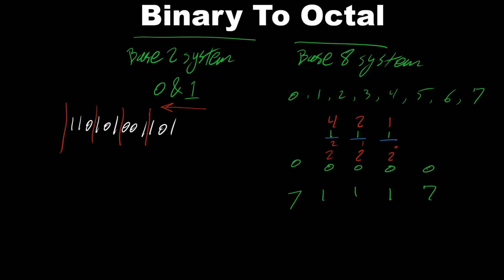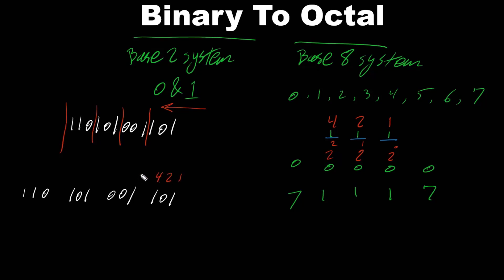Let's rewrite the binary number grouped by every 3 bits: 1 1 0 | 1 0 1 | 0 1 1 | 0 1. Then we place the decimal values for each group: 1, 2, 4 — repeating for each group. These values come from 2 to the power of the bit position.